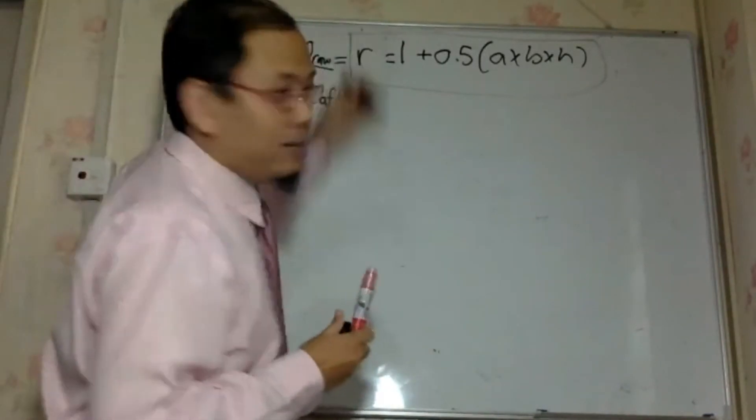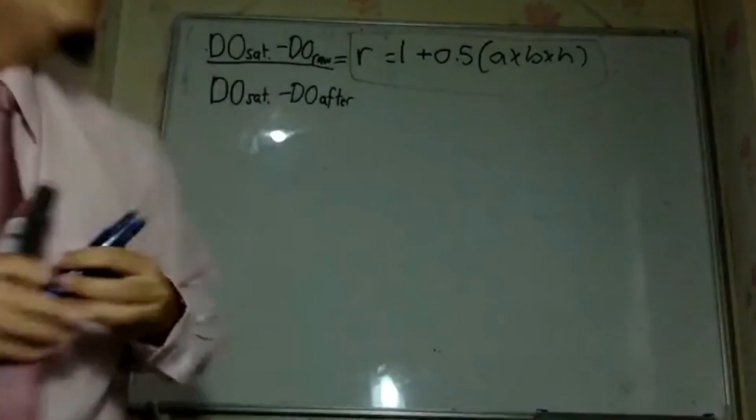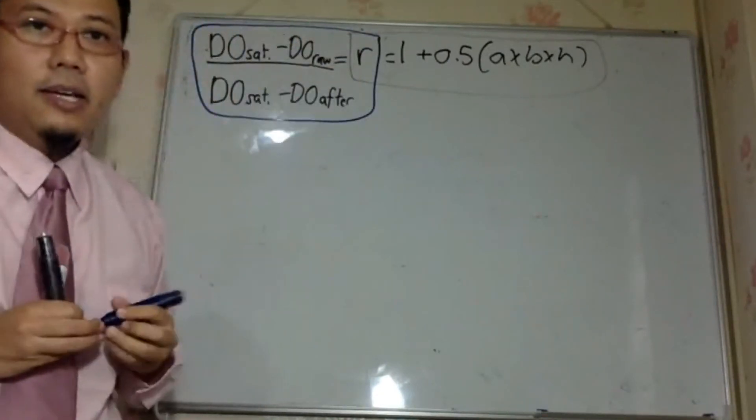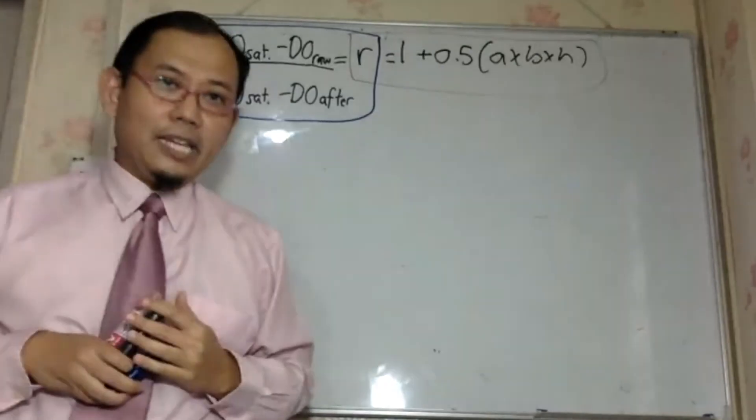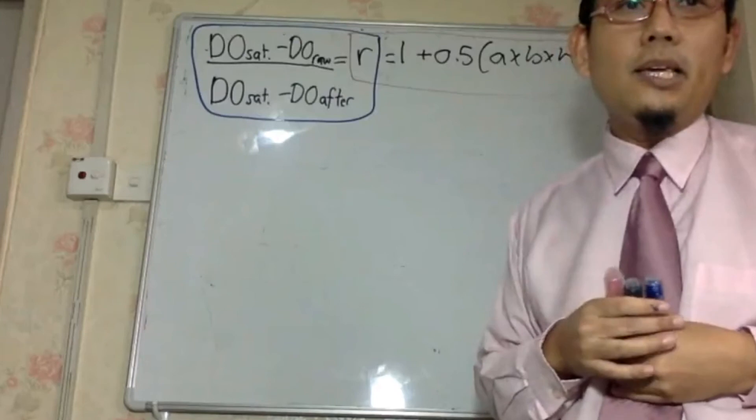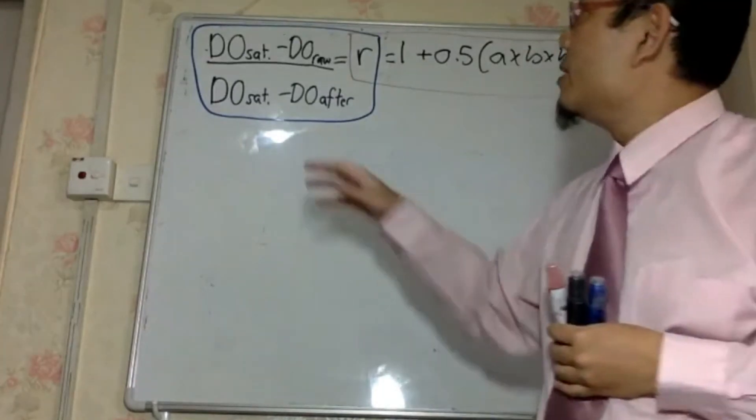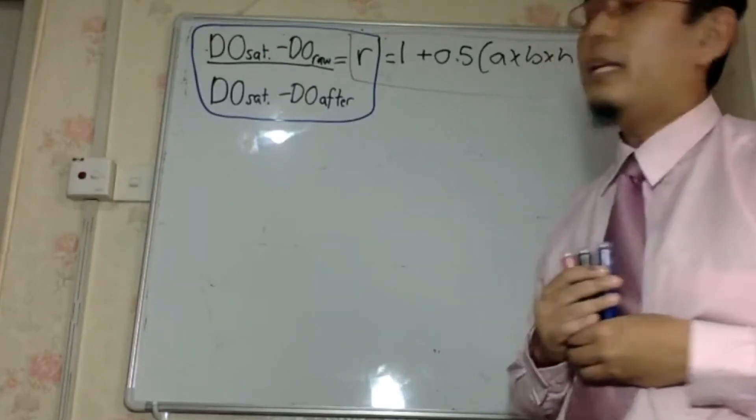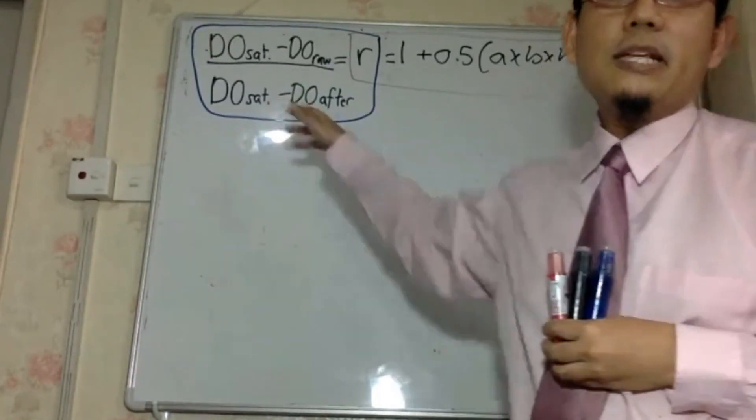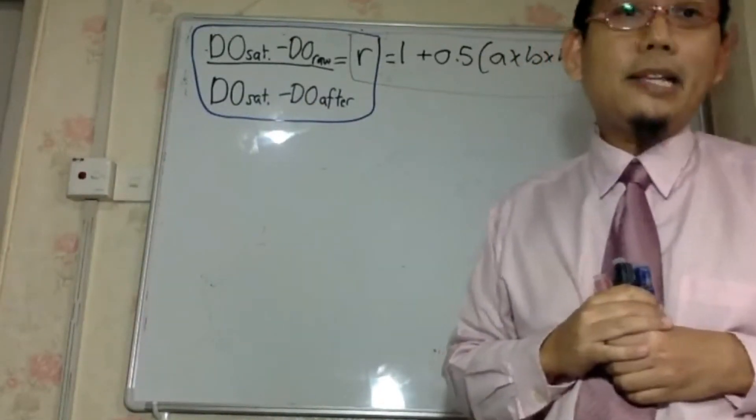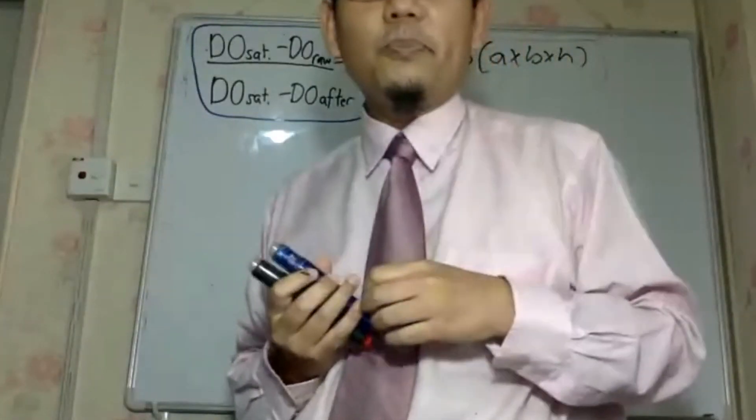But this one, the other one, let me label it the blue color like this. This is the second part of the equation here, will never never be given in the exam. So DO saturation minus DO raw divided by DO saturation minus DO after. So this is something that you have to memorize. Is that clear? Clear, clear. Thank you.